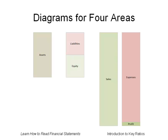I'm going to use these diagrams to discuss the component ratios of return on equity. This shows assets and the way those assets are financed through liabilities or equity, and it shows sales and the expenses subtracted from sales, leaving the profit or net income.